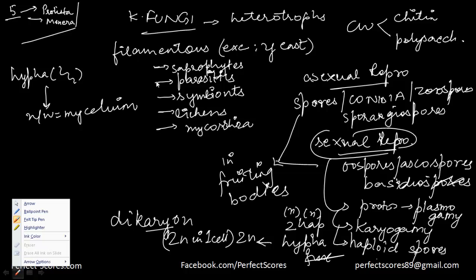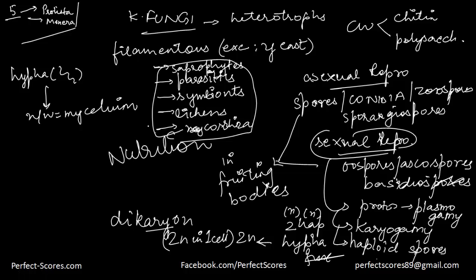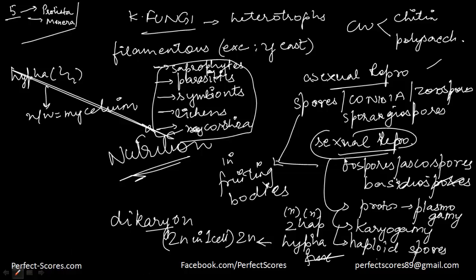To recap kingdom Fungi: it is filamentous with hyphae (thread-like structures) that help form mycelium. Nutrition modes include saprophytes, parasites, symbionts, lichens, and mycorrhizae. Reproduction can be asexual — through spores, conidia, zoospores, or sporangiospores — or sexual, through oospores, ascospores, basidiospores, or other kinds of spores.